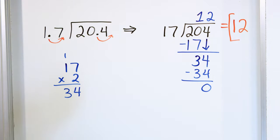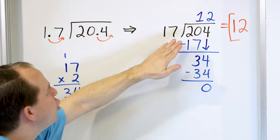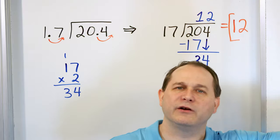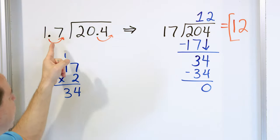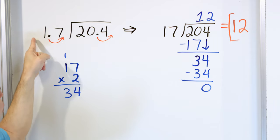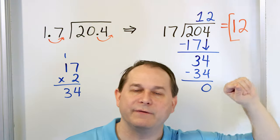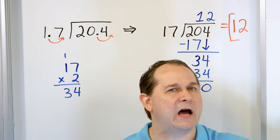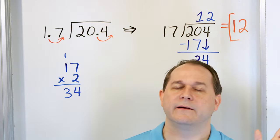The answer to this problem is 12, and that is exactly the same answer as when we take 20.4 and divide by 1.7. We convert it to this because when we don't have decimals on the outside, it makes doing the long division process easier. So every single time we're dividing by a decimal, we move the decimal as many spots as it takes to get a whole number on the outside. However many spots we move it, we must also move the inner decimal the same number of spots, because if you move one but not the other, you've changed the problem.